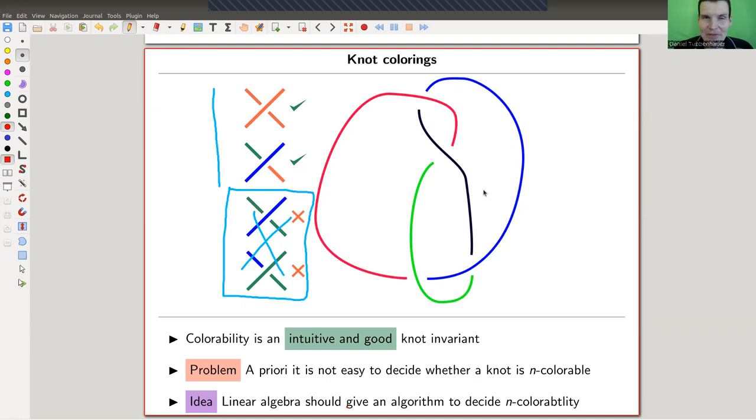And the idea is now to kind of still try everything, but in a linear algebra fashion. So you try everything in a smart way. A priori, it's just not easy to decide whether you have this n coloring, because for a huge knot it will be kind of brute force, you need to test everything, not a good idea. It would be much better to have some algorithm to decide very easily whether something is colorable or not.